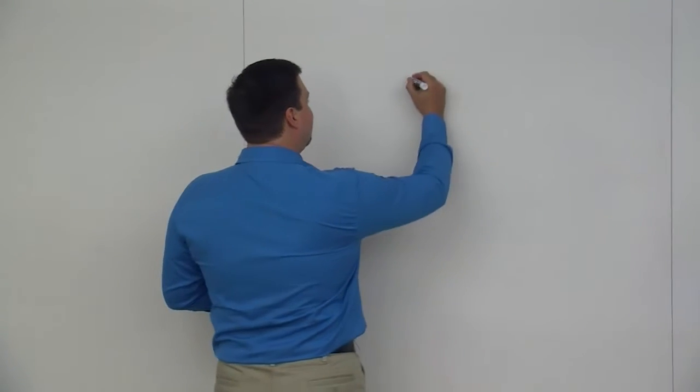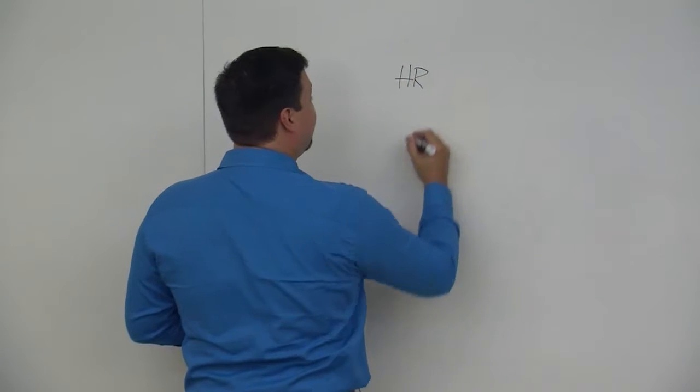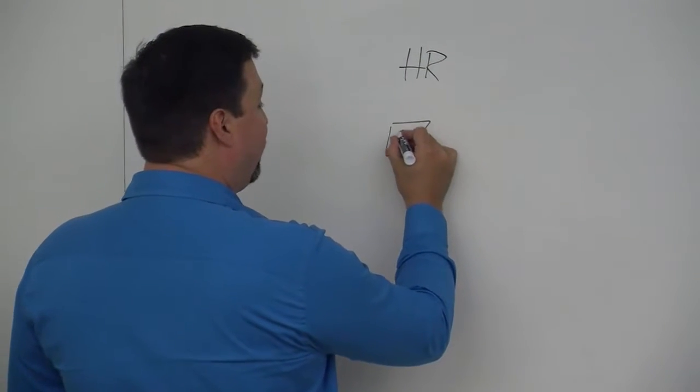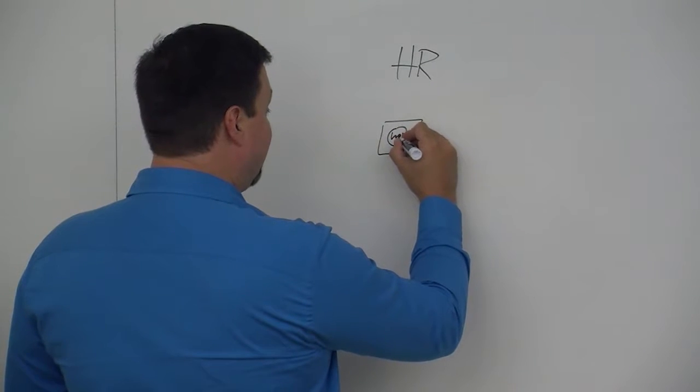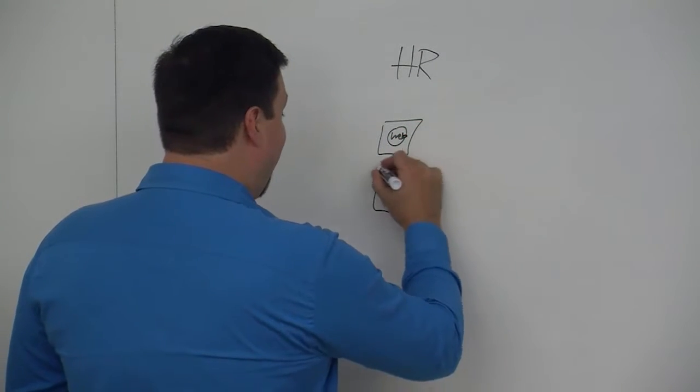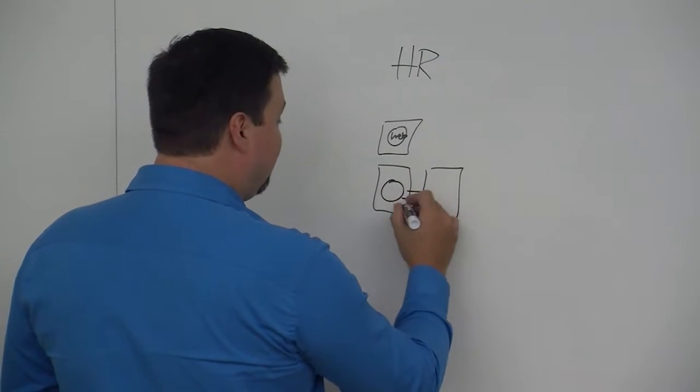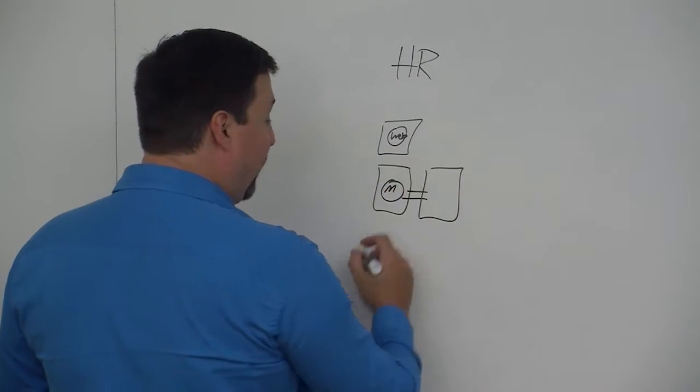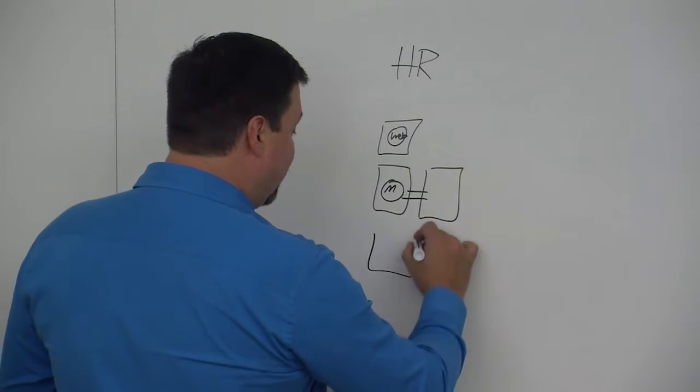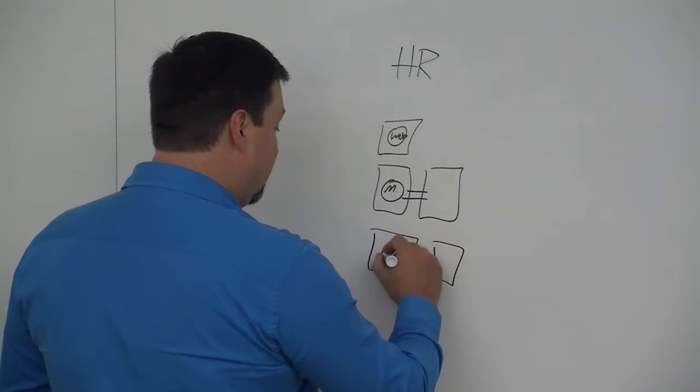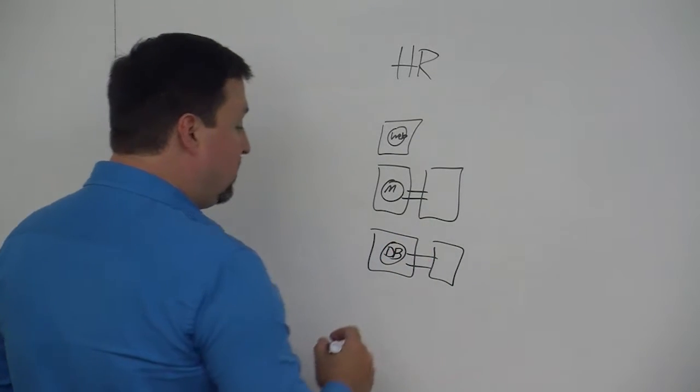For example, you have an HR app. The HR application has a presentation layer with a web application. That web application is grabbing info from your middle tier box, which is some middleware. At the lowest end of that application is a very high-end database, something like Oracle or Sybase.